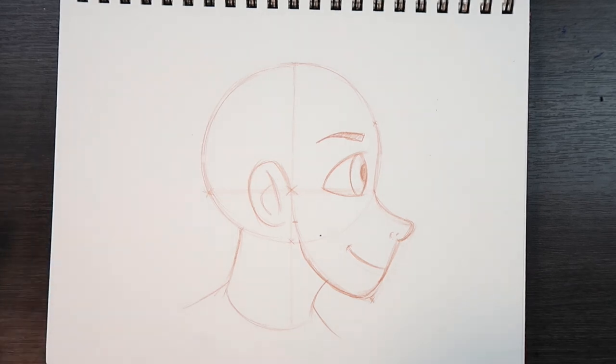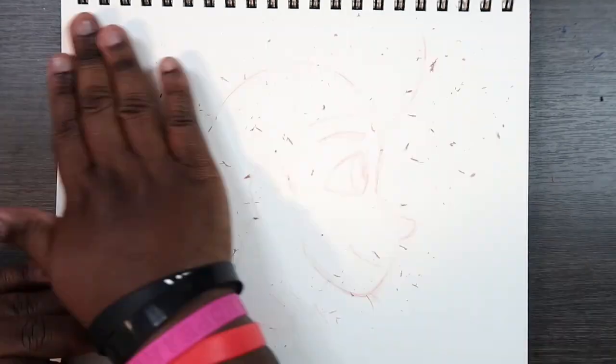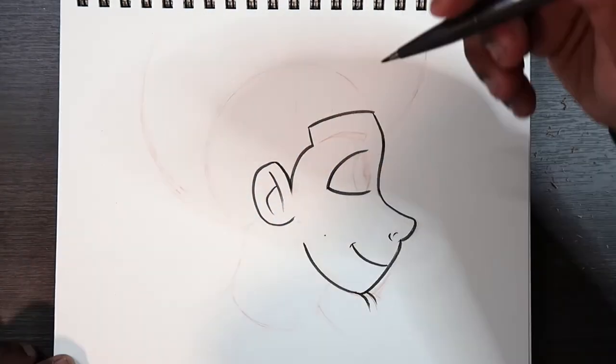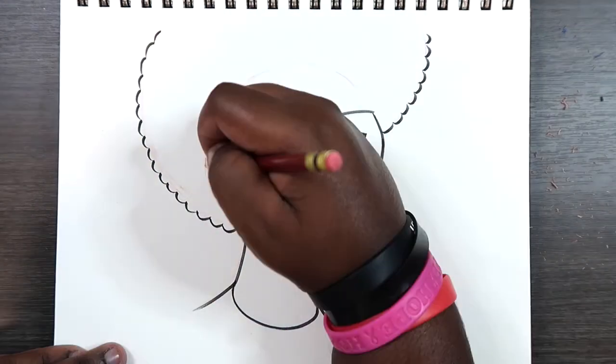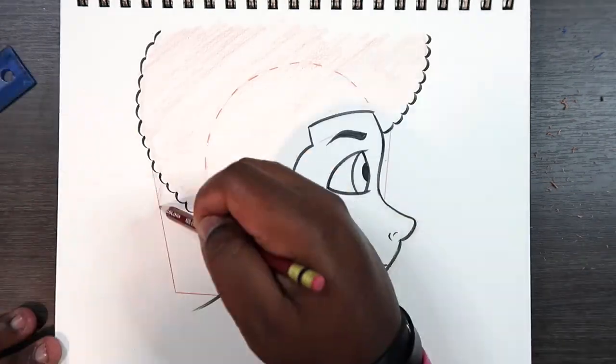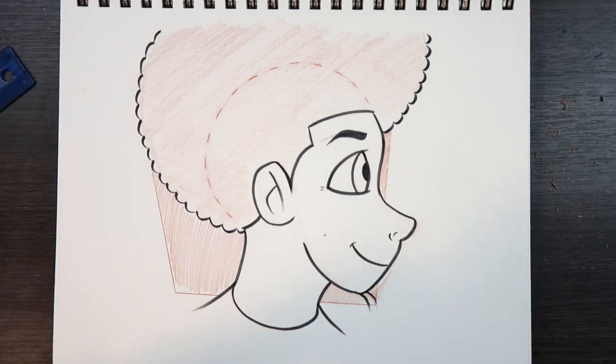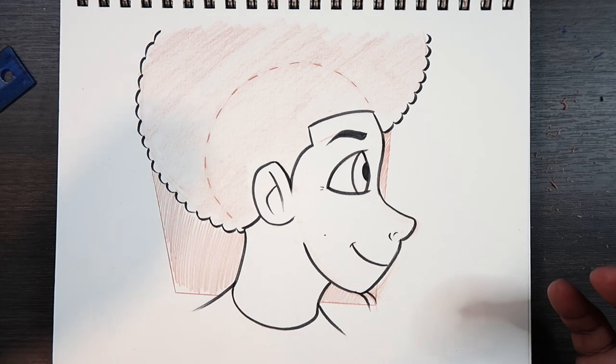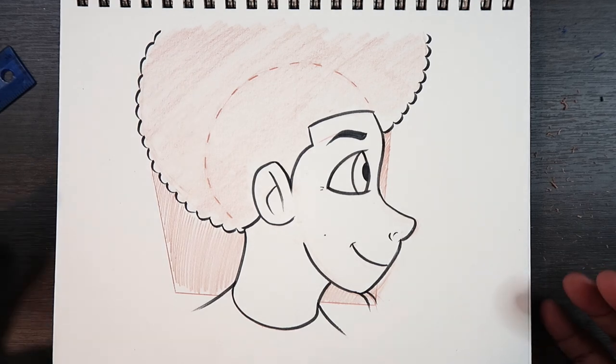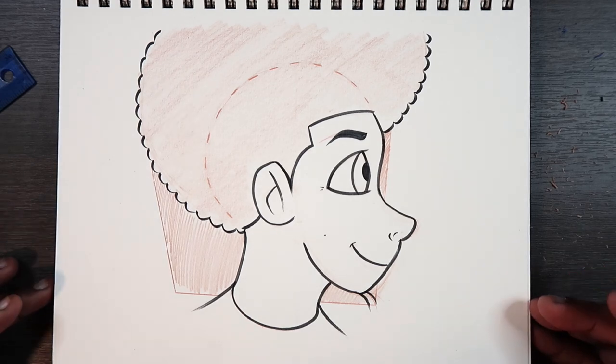Once we're done drawing the eye, we're pretty much done at this point. All we got left to do is add the hairstyle. You can pretty much do that however you're going to do it. But for now, I'm just going to draw any kind of hairstyle in. And that's how you draw a face at a profile view. So if you like the video or if you found it useful, give it a like and a comment. Subscribe if you haven't, and tap the notification bell so you never miss an upload. And I'll see you guys next time.